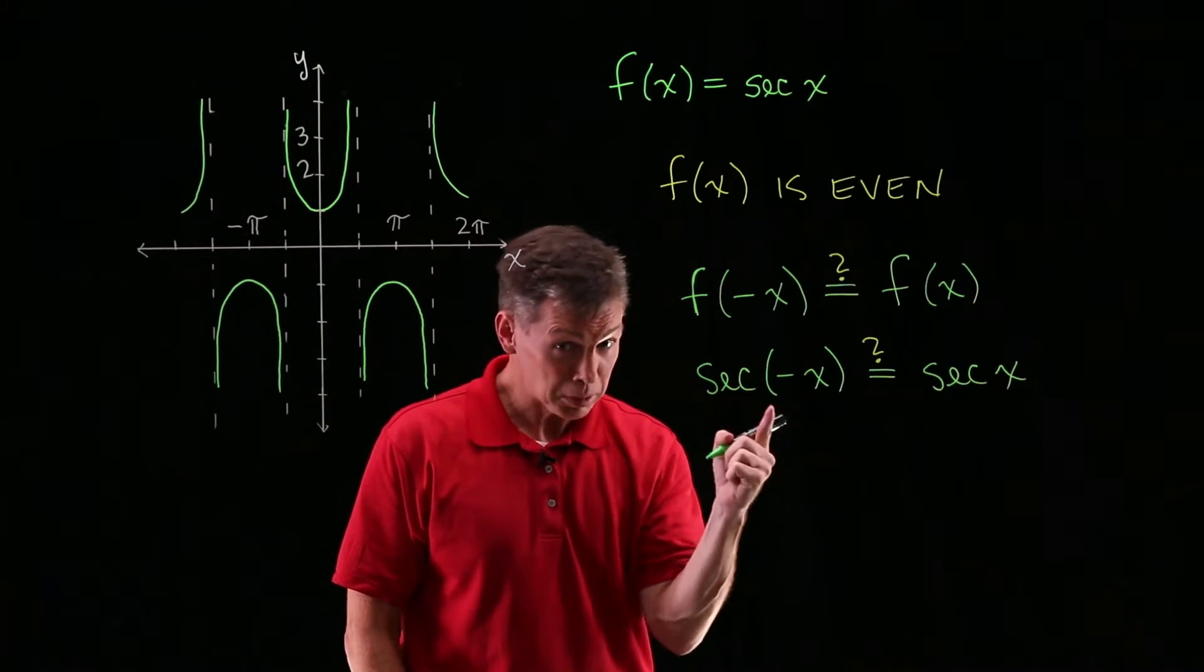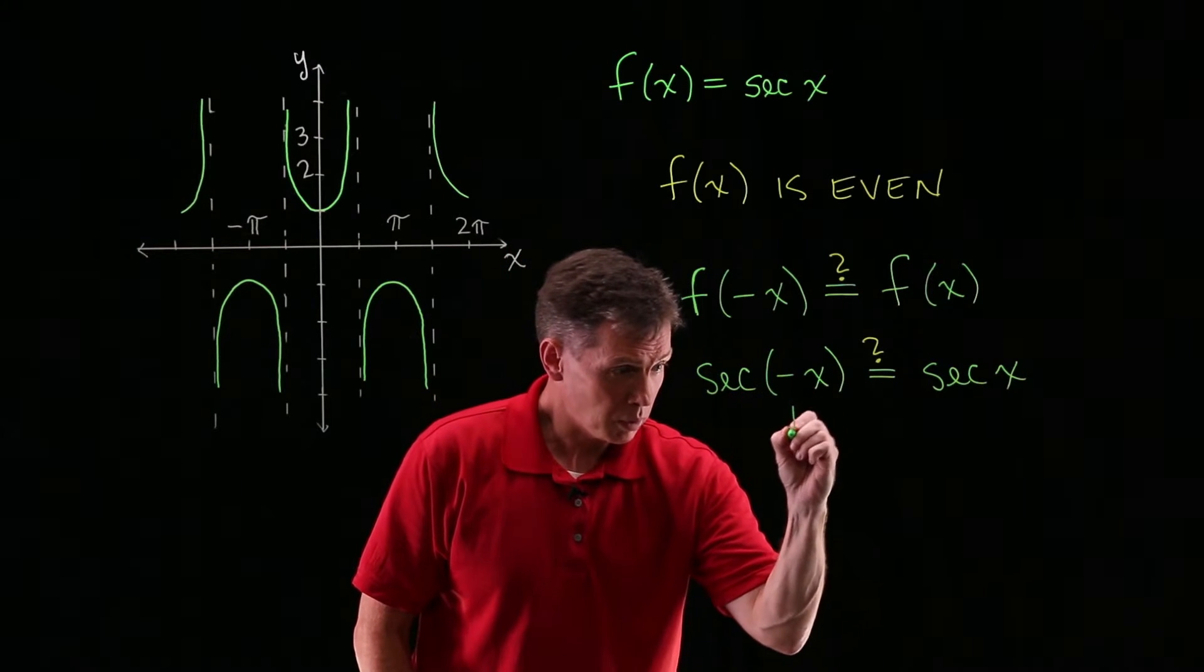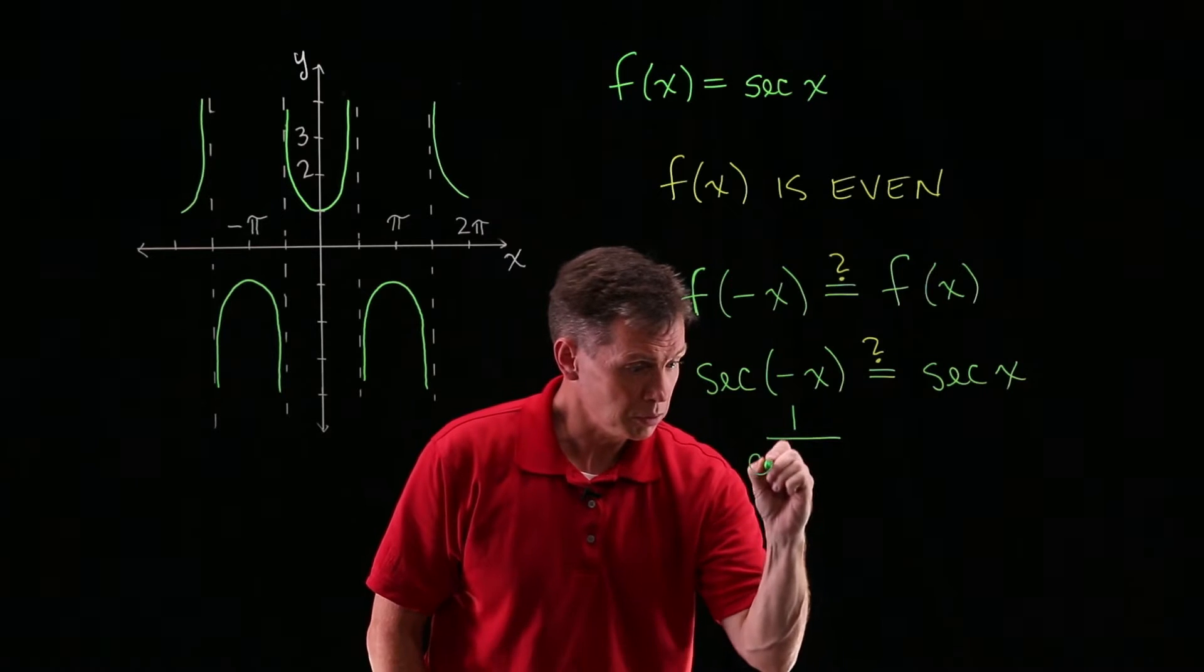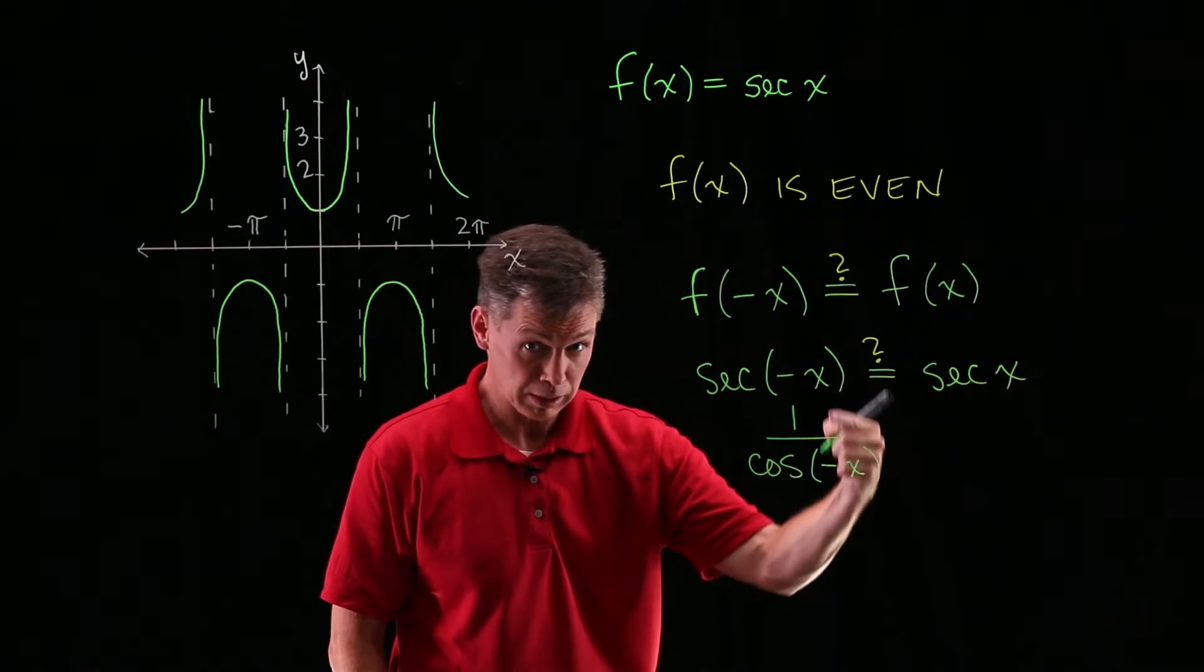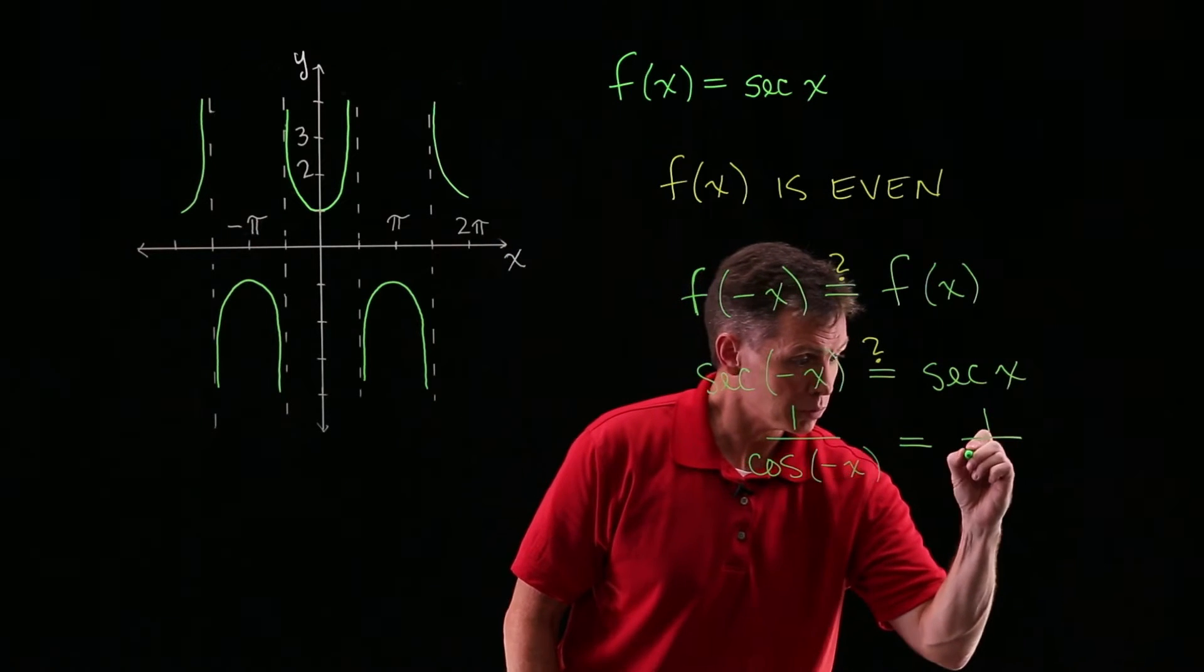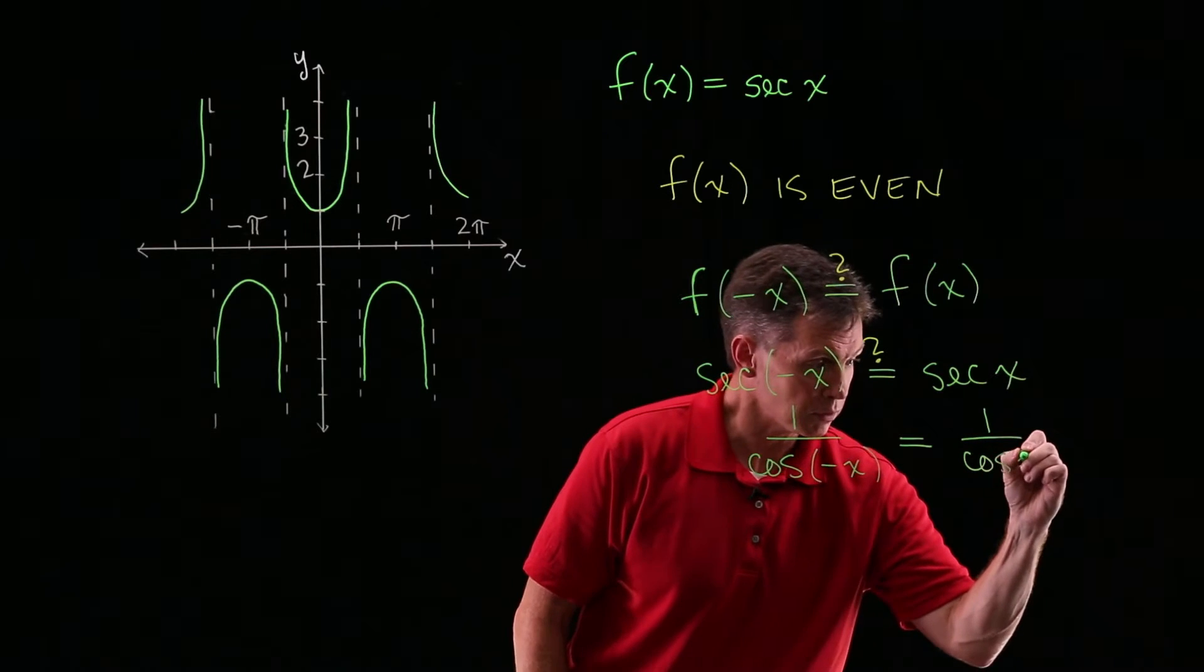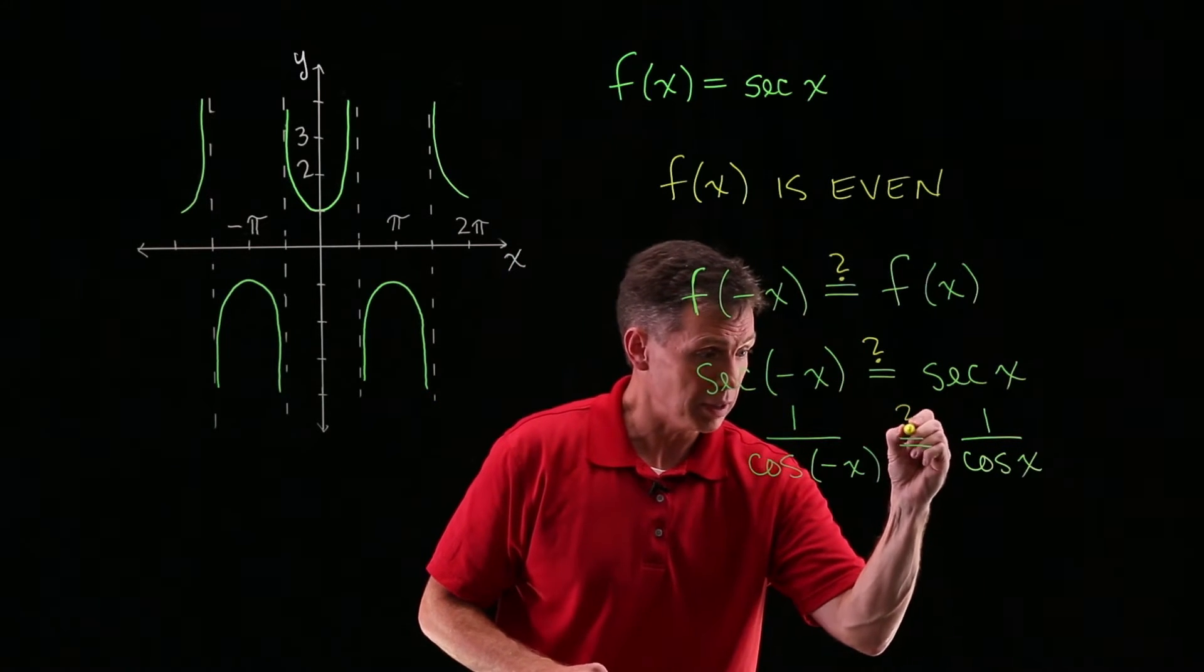Then what I'm going to do is a little bit of trigonometric manipulation, and it's not as difficult as it sounds. It sounds more impressive. My manipulation is going to be to recognize that secant is 1 over cosine. So in this case, 1 over cosine of minus x. On the right-hand side, 1 over cosine of x. Same rewrite. Still asking if that equals.